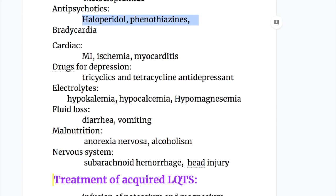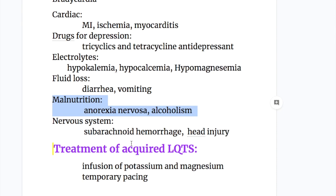Amongst the drugs for depression: tricyclic and tetracyclic antidepressants. Amongst the electrolytes: hypokalemia, hypocalcemia and hypomagnesemia. Fluid loss: diarrhea and vomiting cause Long QT syndrome by reducing potassium and calcium. Malnutrition: anorexia nervosa and alcoholism can also cause Long QT syndrome. And in the nervous system: subarachnoid hemorrhage and head injury.